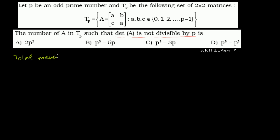What's the total number of members in t_sub_p? For a, I have p possible choices — picking up to p minus 1 but including 0, there are actually p possible choices. So I have p possible choices for a, p possible choices for b by the same logic, and p possible choices for c. So there are a total of p cubed members in t_sub_p.